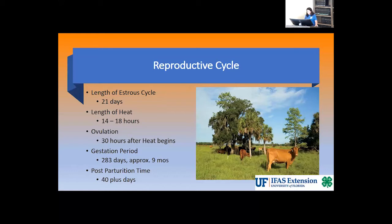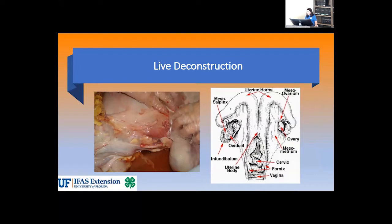After birth of the calf, the postpartum period is approximately 40 days or more, which is the time before the cow or heifer may rebreed. Basic knowledge of the reproductive tract will help you do a better job of getting the cow or heifer pregnant, especially when using artificial insemination. It will also enable you to better control reproductive diseases and calving problems.